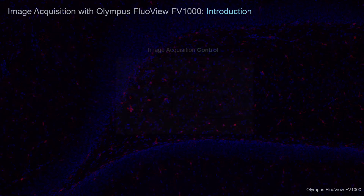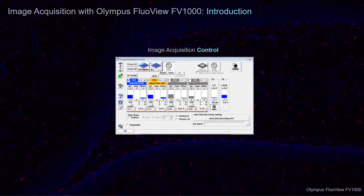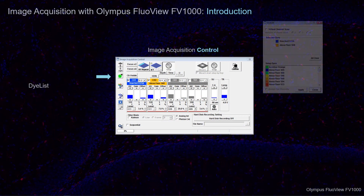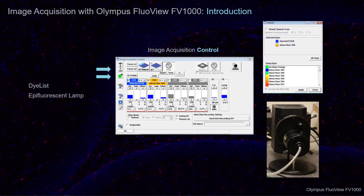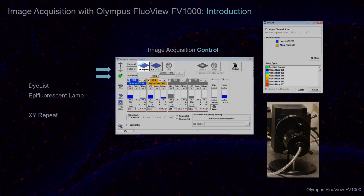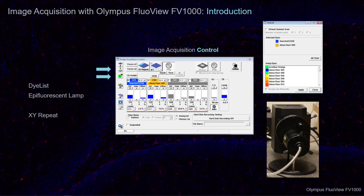The Image Acquisition Control window is where you can access the die list containing setup dies and the switch to turn on and off the epifluorescent lamp. This is also where you select the XY Repeat button to generate the Live View. When you have done so, you can then fine-tune the quality of the live image by adjusting the acquisition parameters. This will be covered in more detail in tutorial 2.